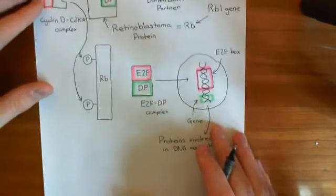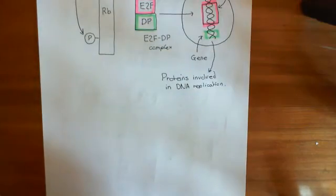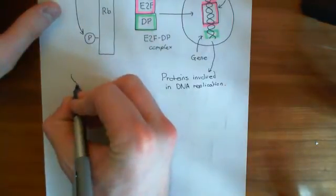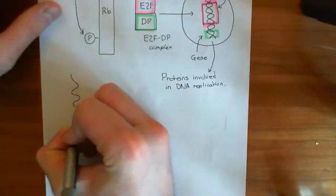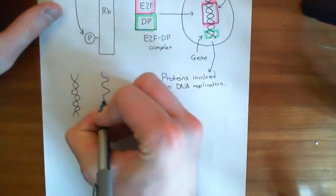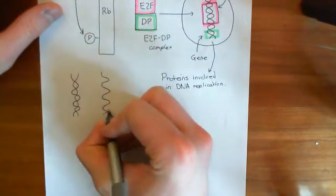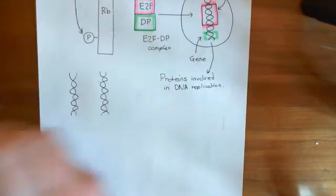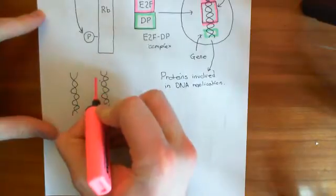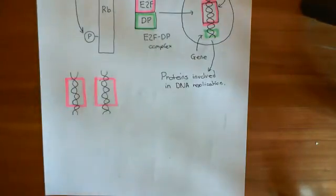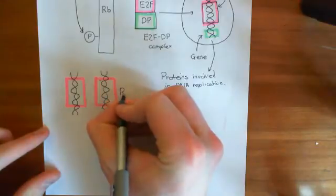The RB1 gene is found on chromosome 13, and you have two chromosome 13s. So you have two of these RB1 genes — here is your paternal chromosome 13 and your maternal chromosome 13 — and we are looking specifically at the RB1 genes on this chromosome. The important thing to understand is that you have two copies of this RB1 gene.